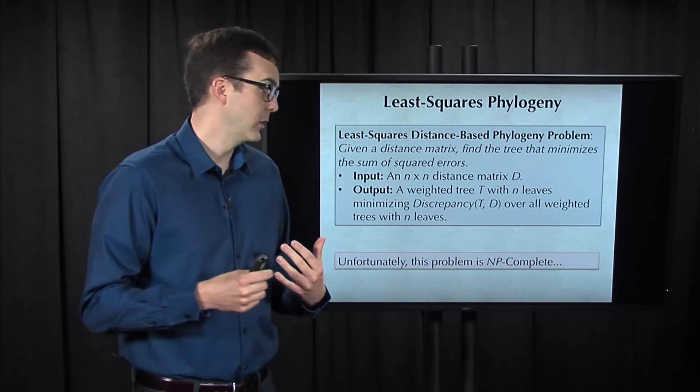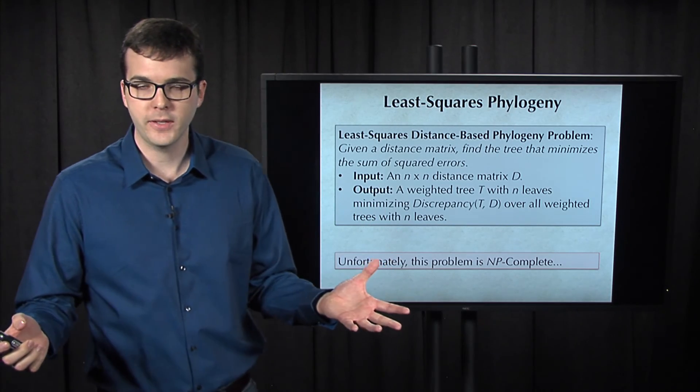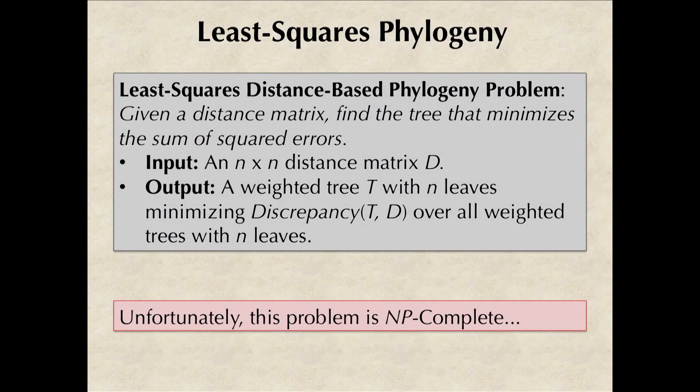The number of tree structures is exponential in the number of leaves in the tree, and so, unfortunately, this least squares distance-based phylogeny problem is NP-complete, and so it's not going to help us fit a tree to a non-additive matrix.